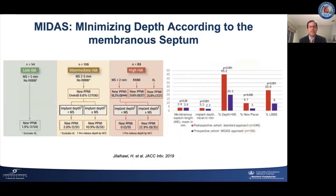I want to call attention to the recently published MIDAS study. This is an example of using new predictors of conduction disturbances to modify procedural conduct. The difference between implant depth and membranous septum length was shown in a retrospective cohort to be important in predicting pacemaker. It was shown with a repositionable valve system that taking into account the length of the membranous septum and trying to implant valves higher in those with short membranous septum lengths led to very low pacemaker rates in the low single digits — an important potential step forward in this area.